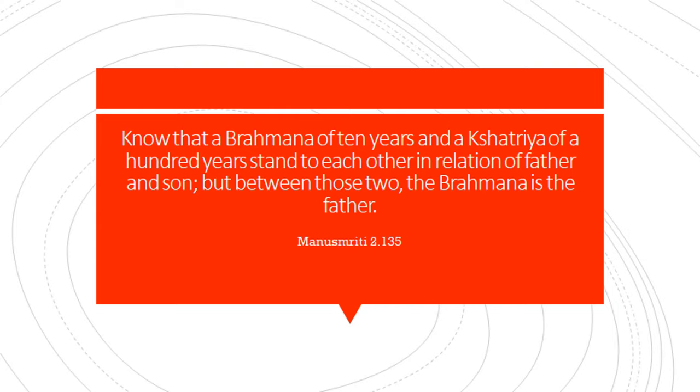While Brahmanas had the most power, the Brahmanas and Kshatriyas were not quite equal. The Manusmriti says that when a hundred-year-old Kshatriya and a ten-year-old Brahmana stand together, the relation between them would be like that of a father and son — except in this case, the father would be the ten-year-old Brahmana, not the hundred-year-old Kshatriya.